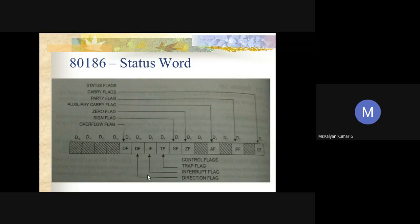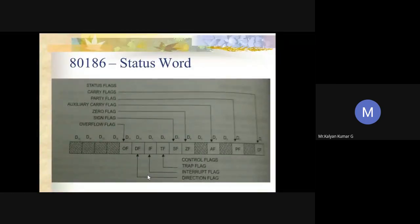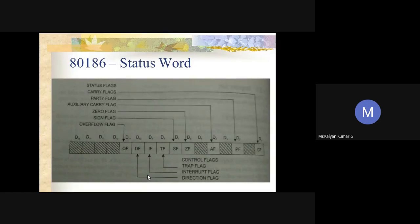The sign flag is set if the result is negative, or if the MSB (higher-order bit) is 1; it is reset if the result is positive or the MSB is zero. These flags — carry, parity, auxiliary carry, zero, sign — all come under the status flags category. One more status flag at bit position 11 is the overflow flag.